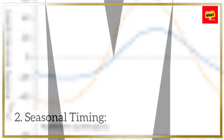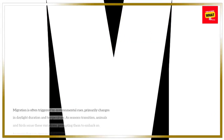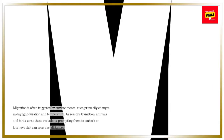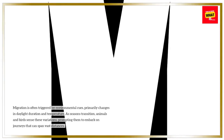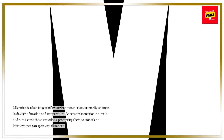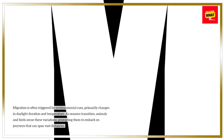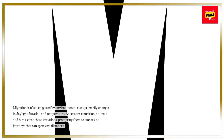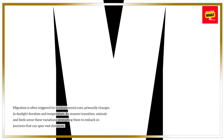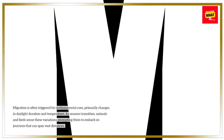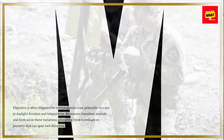Seasonal Timing. Migration is often triggered by environmental cues, primarily changes in daylight duration and temperature. As seasons transition, animals and birds sense these variations, prompting them to embark on journeys that can span vast distances.